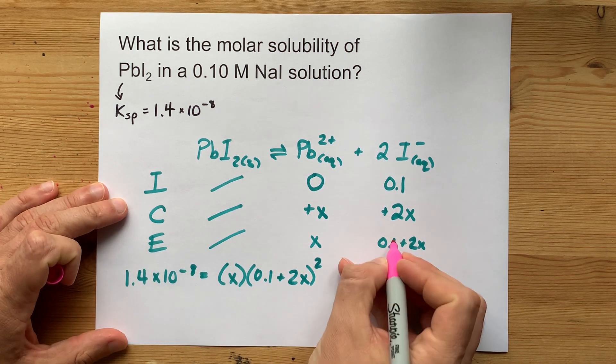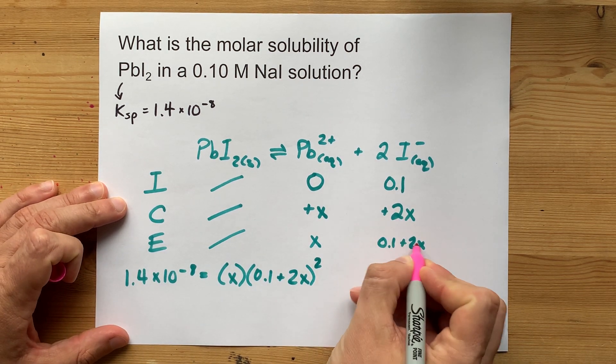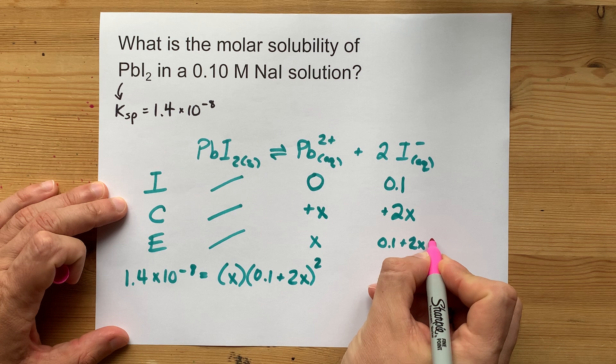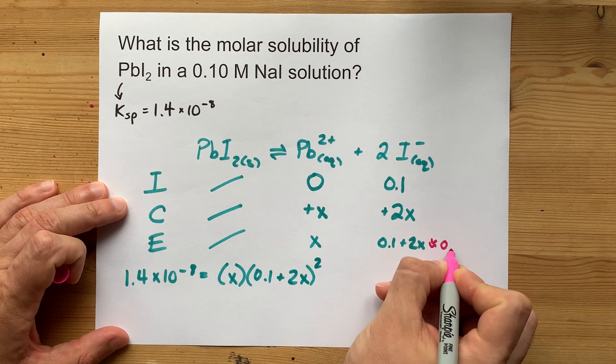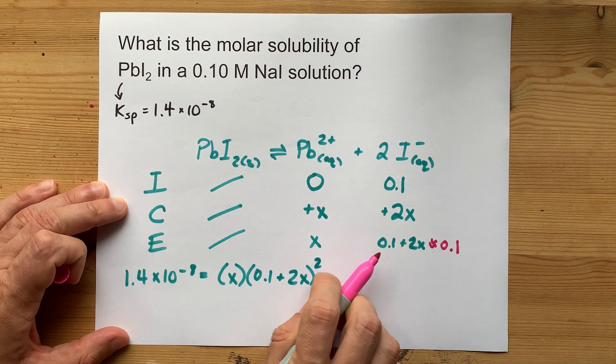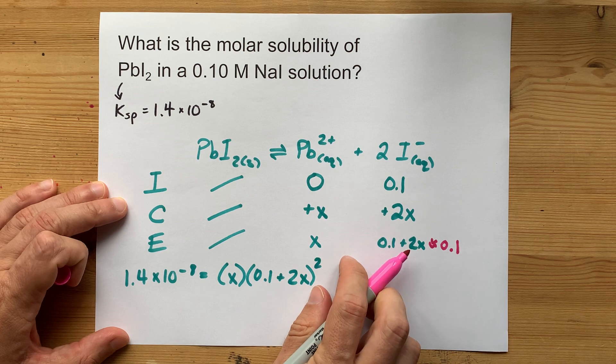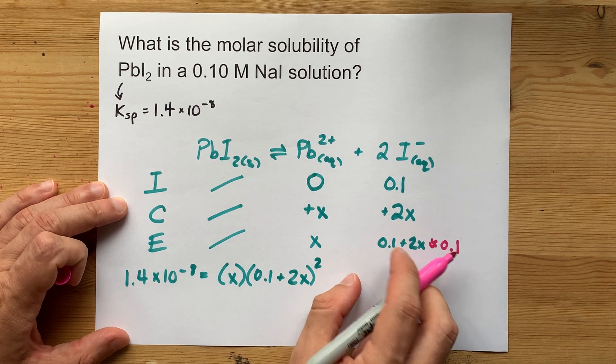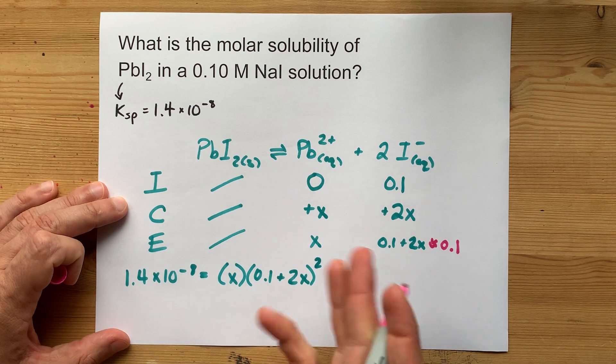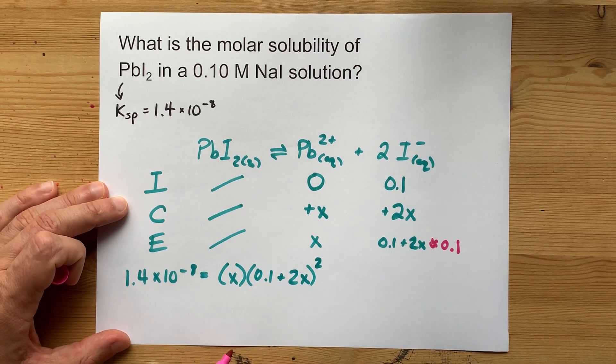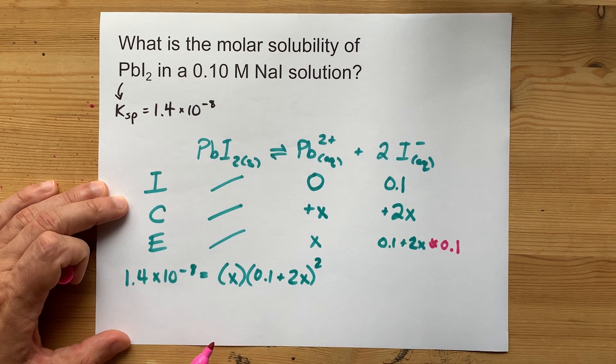What that means is that 0.1 plus a tiny number is still going to be about 0.1. It's like if you give a millionaire a dollar, they're still about a millionaire. You haven't changed them significantly with that one single dollar. Well, $2 in this case.